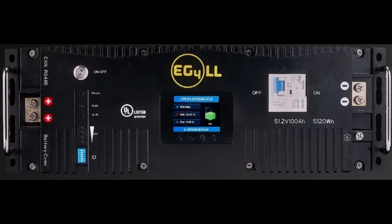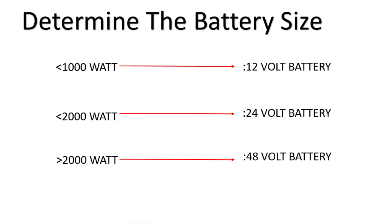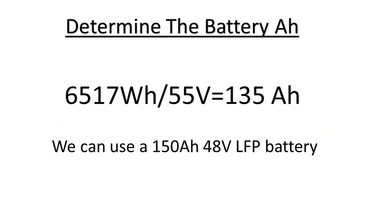We now need to select a battery voltage. The rule of thumb is: if you require 1,000 watts or less, use a 12-volt battery system; if you require 2,000 watts, use a 24-volt system; if you require more than 2,000 watts, use a 48-volt system. We will be using a 48-volt battery system since our daily watt-hour usage is about 1,900 watt-hours. Using a 48-volt system will reduce your current and also reduce your wire and fuse sizes, saving you money. We then calculate: 6,517 watt-hours divided by 51 volts equals 135 amp-hours, so we can use a 150 amp-hour 48-volt battery.